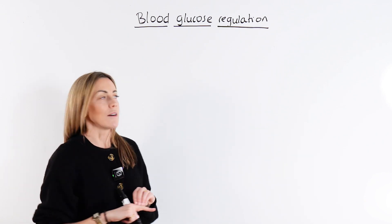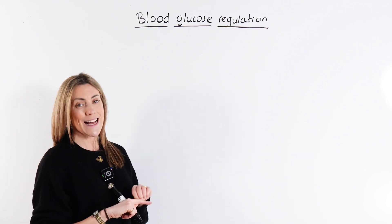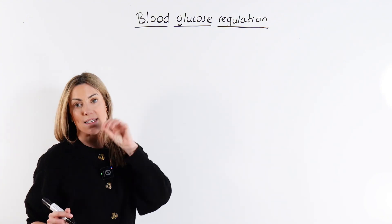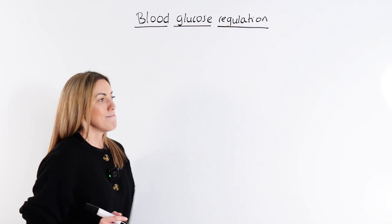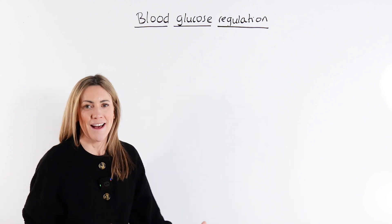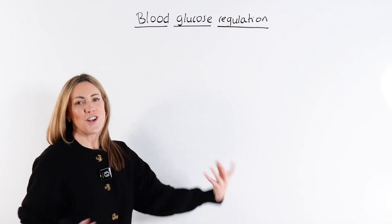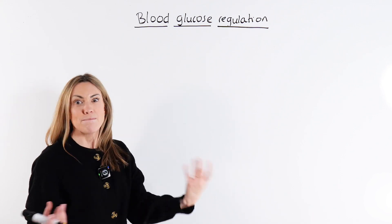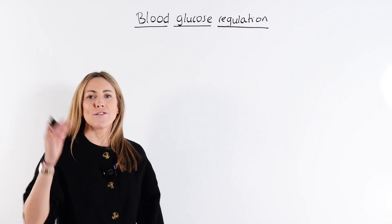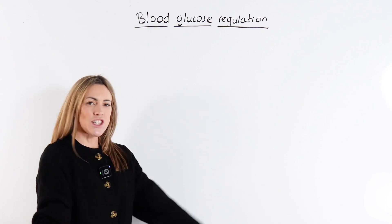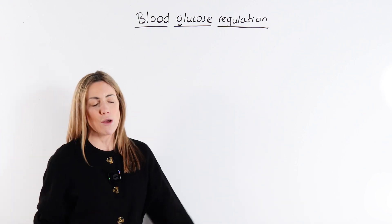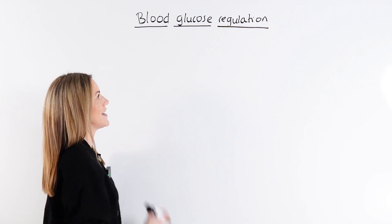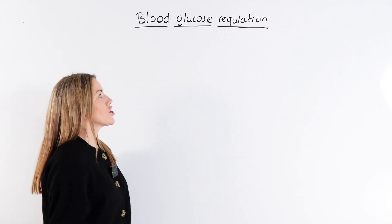This is what we're going to look at today. So let's start with your blood glucose concentration being too high — it has gone above normal. Maybe you've just eaten loads of sugar, loads of chocolate, loads of cake, or maybe just a big baked potato. Your blood glucose level has risen; you've digested the starch in that potato and absorbed the glucose via your small intestine into your blood. It has shot up.